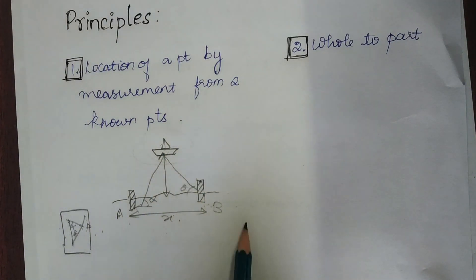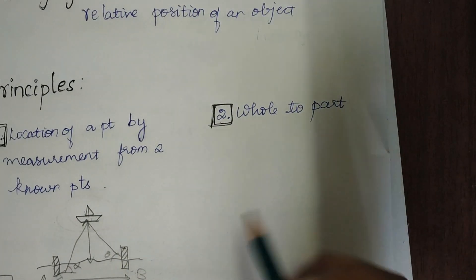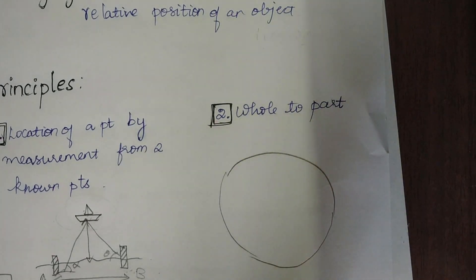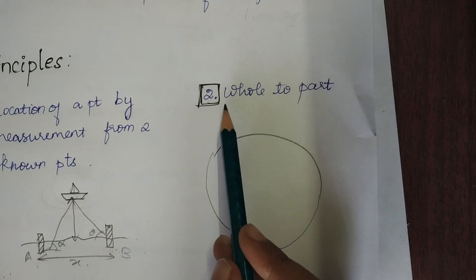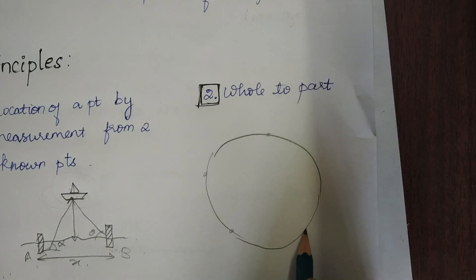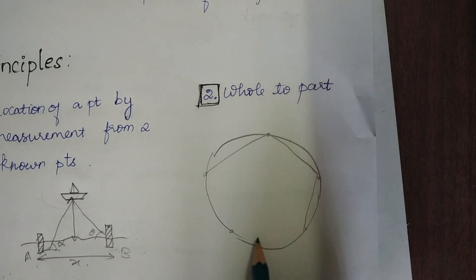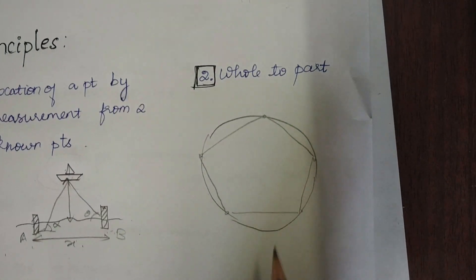Next is working from whole to part. Say I have a ground or a plot and I have to find the area of this plot. First, using the principle of whole to part, I establish several control points with high precision at the edges of the plot and join them.